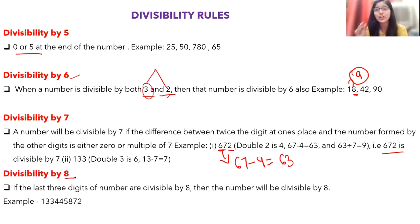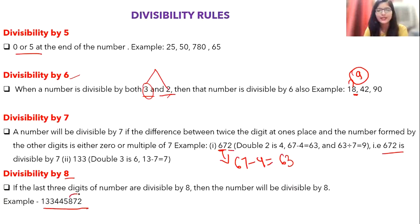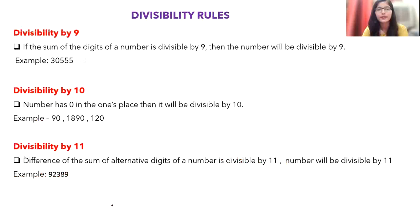For divisibility by 8: check the last three digits of the number. If the last three digits are divisible by 8, then the entire number is divisible by 8. For example, looking at a large number, if the last three digits are 872 and 872 is divisible by 8, then the whole number is divisible by 8.